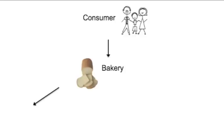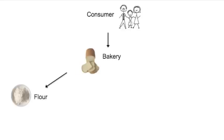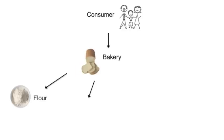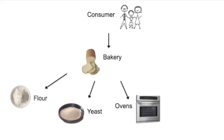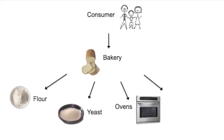The bakery will need the following four main ingredients and tools in order to make bread. First, there's flour, and then there's active dry yeast, and then there's ovens, and also cooking utensils.